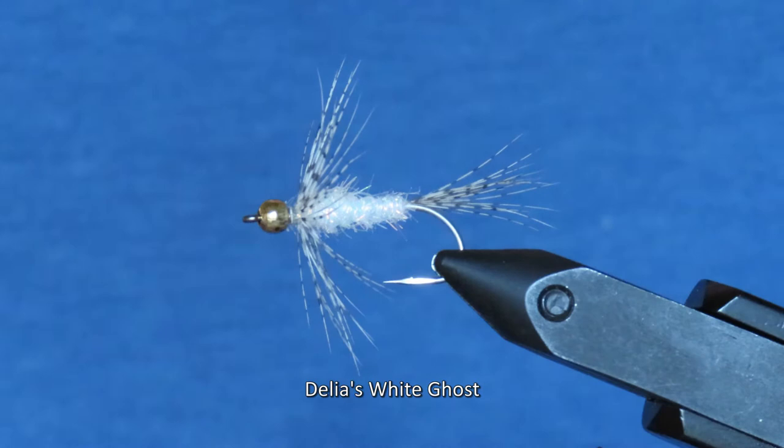This is Delia's white ghost, the brainchild of Jeffrey Delia, who's probably best known for his conehead squid, which is definitely one of the more popular patterns around here in Puget Sound.